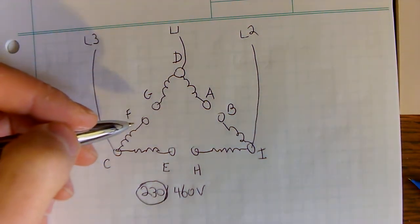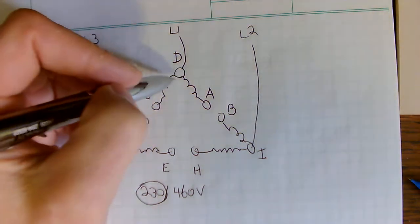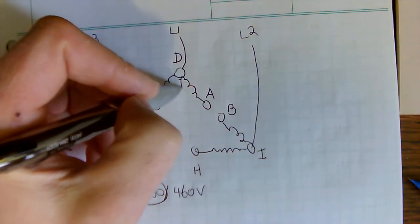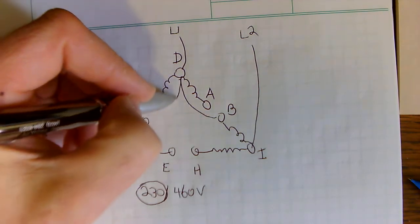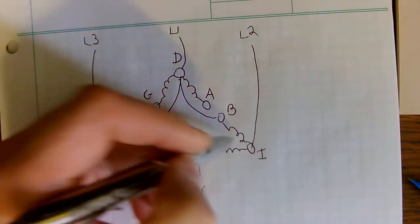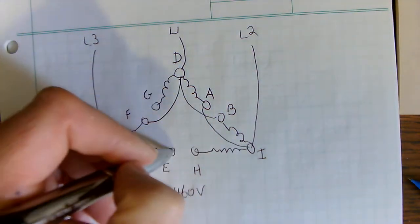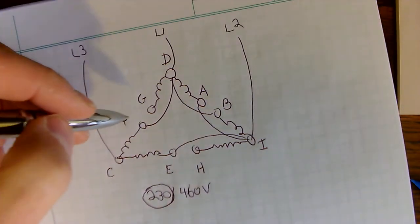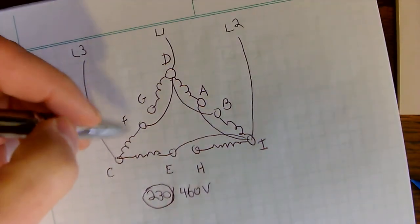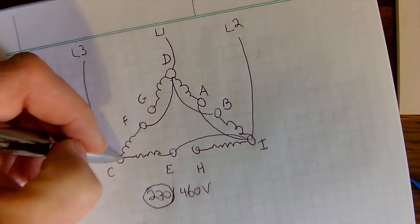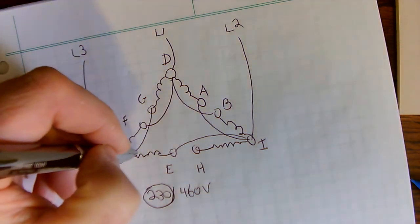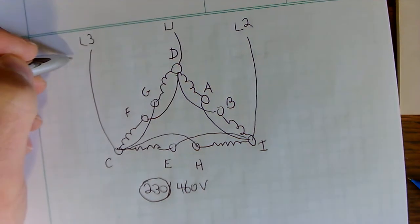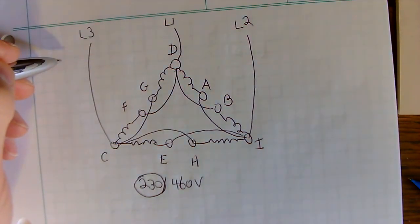Here's how you do the low voltage connection: D is going to connect to B and E, I is going to connect to A and... did I say E last time? I meant F.